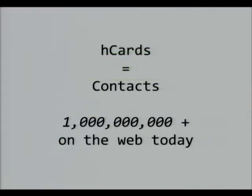Perhaps the most popular microformat out there is called the H-Card. Very simply, it's about representing contact information — the name of a person or a business, phone numbers, addresses, and other ways to get contact information for that person or business. Already on the web today, there are over a billion pages that have H-Cards formatted into them.